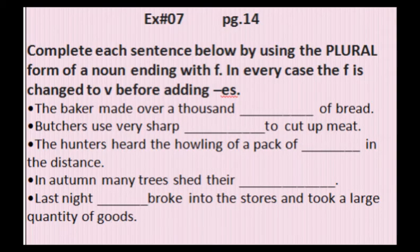Exercise 7 on page number 14: complete each sentence below by using the plural form of a noun ending with F. In every case the F is changed to V before adding ES. So if the noun is ending with F, we omit the F, add V, and then add ES.